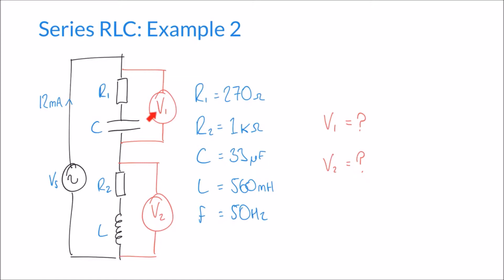The question is to calculate two voltages, V1 and V2, across pairs of components. We're not given the supply voltage — we're told the component values and the frequency of our circuit, but not the magnitude of the supply voltage. However, we are given a supply current of 12 milliamps, and because this is still a series circuit, 12 milliamps is the current for the whole circuit loop.